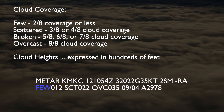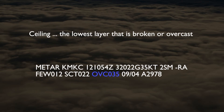The example METAR tells us there are a few clouds at 1,200 feet above the ground, a scattered layer at 2,200 feet, and an overcast layer at 3,500 feet. The lowest cloud layer that is broken or overcast is called the ceiling. In this case, the ceiling is 3,500 feet.